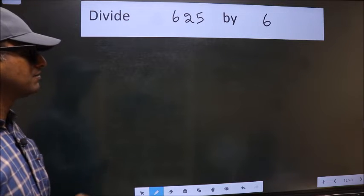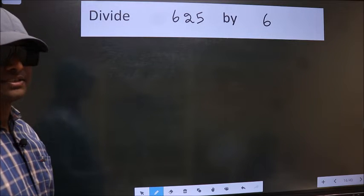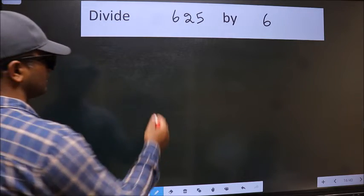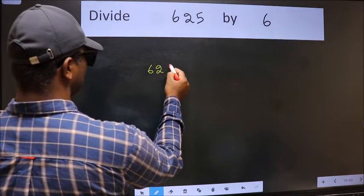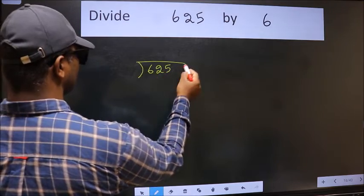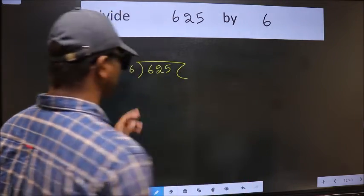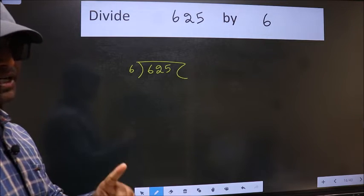Divide 625 by 6. To do this division we should frame it in this way: 625 here and 6 here. This is your step 1.